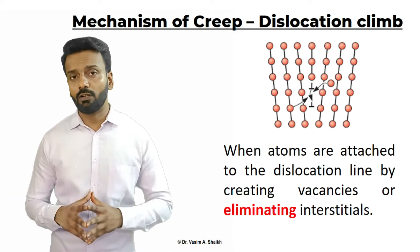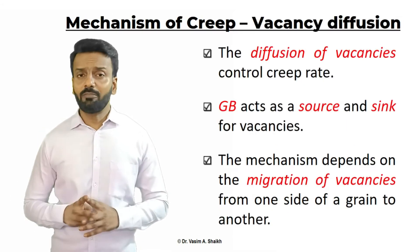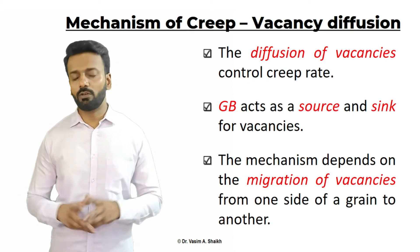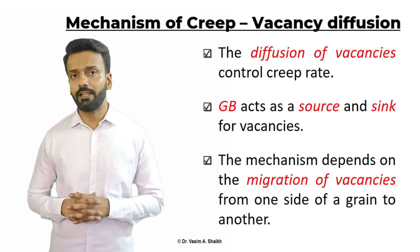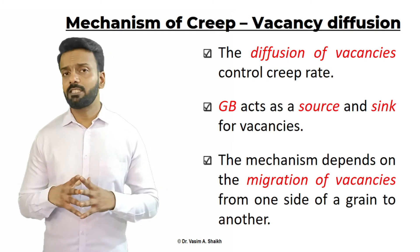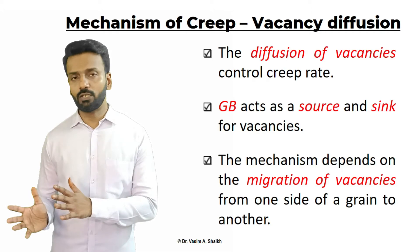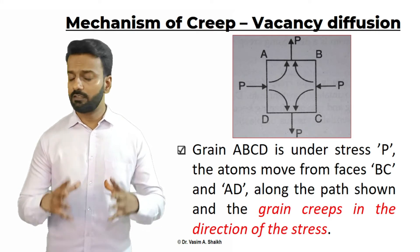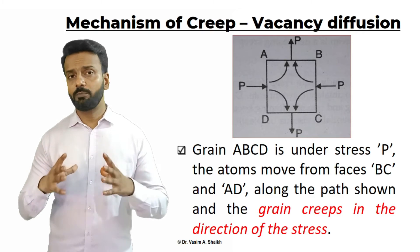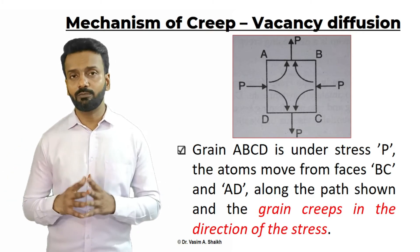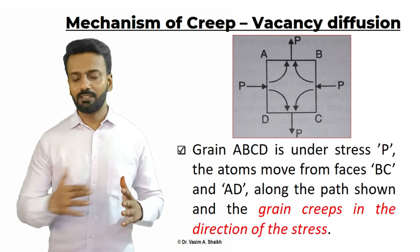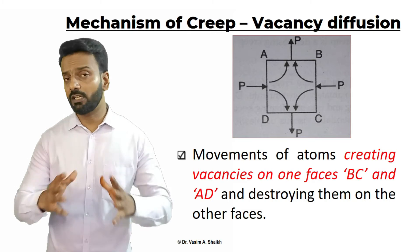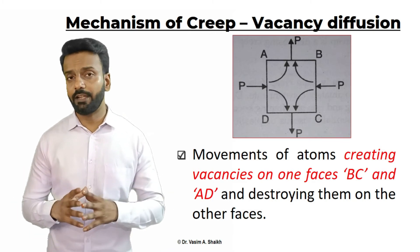The second mechanism of creep is vacancy diffusion. Grain boundaries act as a source and a sink for vacancies, and vacancies migrate depending on the temperature. The mechanism depends on the movement or migration of the vacancy from one side of the grain to the other side. Here in this image, we can see a grain ABCD and the load applied on this grain is shown as P. The faces BC and AD are pushing the atoms towards AB and DC, and the grain creeps in the direction of the stress. Movement of these atoms creates vacancies on faces BC and AD from where the atoms are moving, and vacancies are destroyed at faces AB and DC.